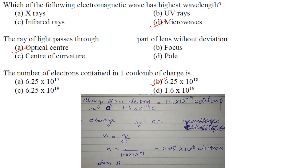So here we will discuss questions from question 1: which of the following electromagnetic waves has highest wavelength? The answer is option D, that is microwaves. They have got the highest wavelength.